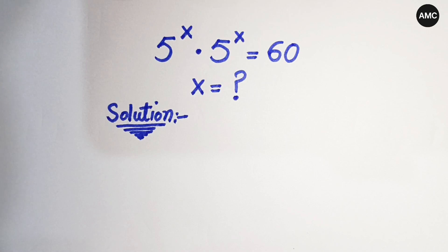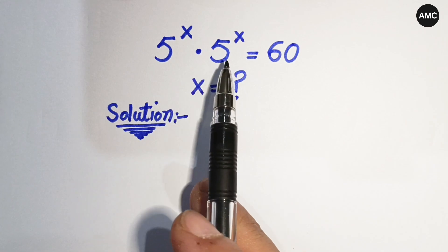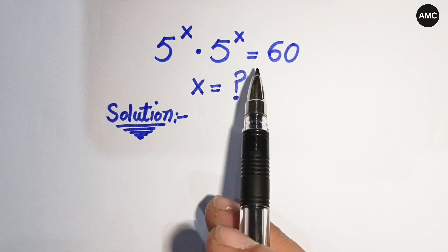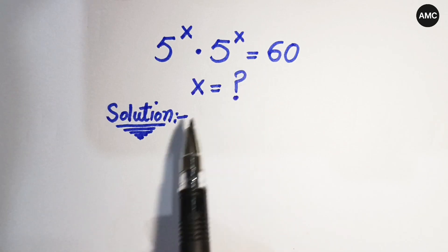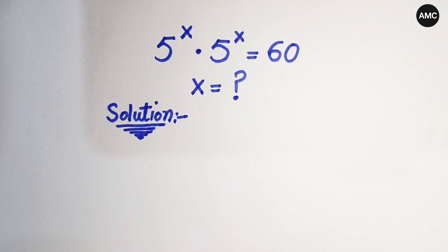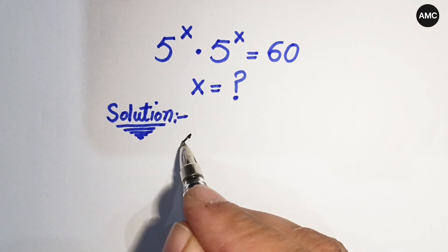Hello everyone, welcome back to Math Club. I hope you are doing well. Today we have a nice German Math Olympiad problem: 5 to the power x times 5 to the power x is equal to 60. We have to find the value of x. Let's start our solution.